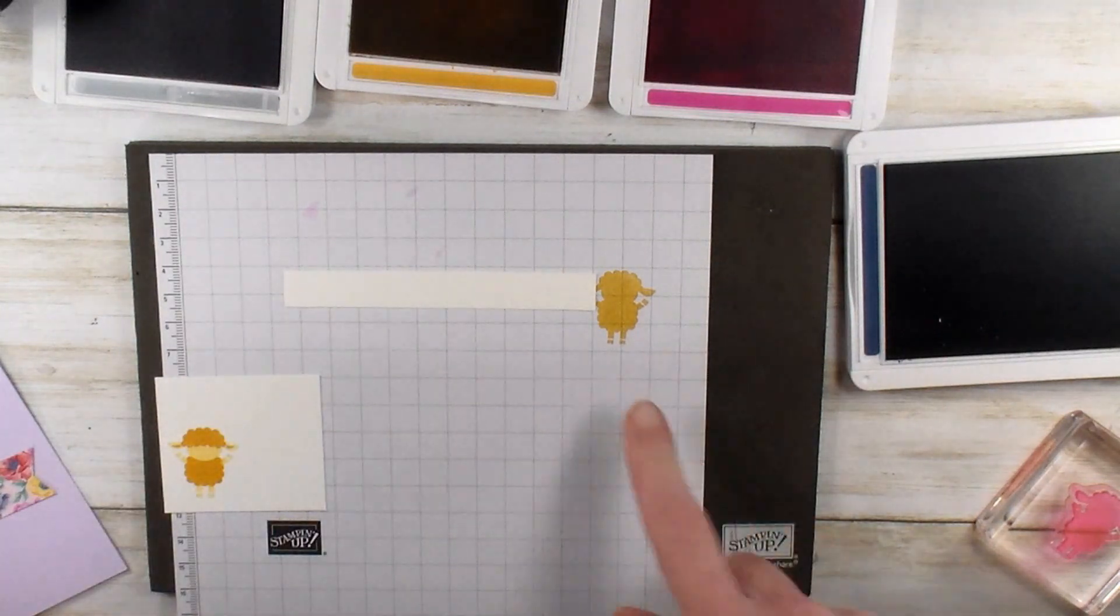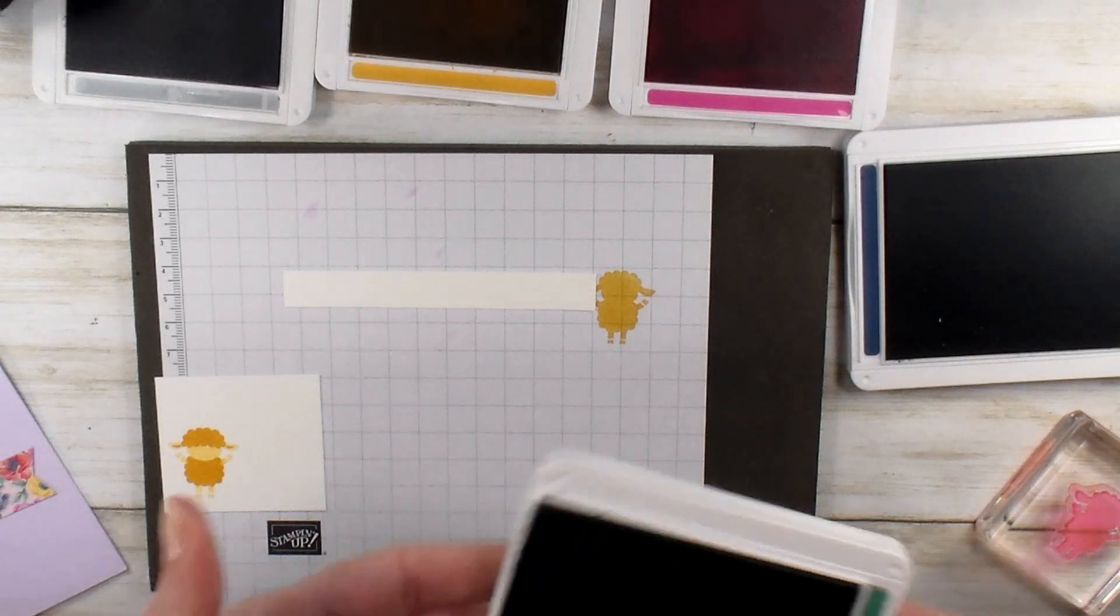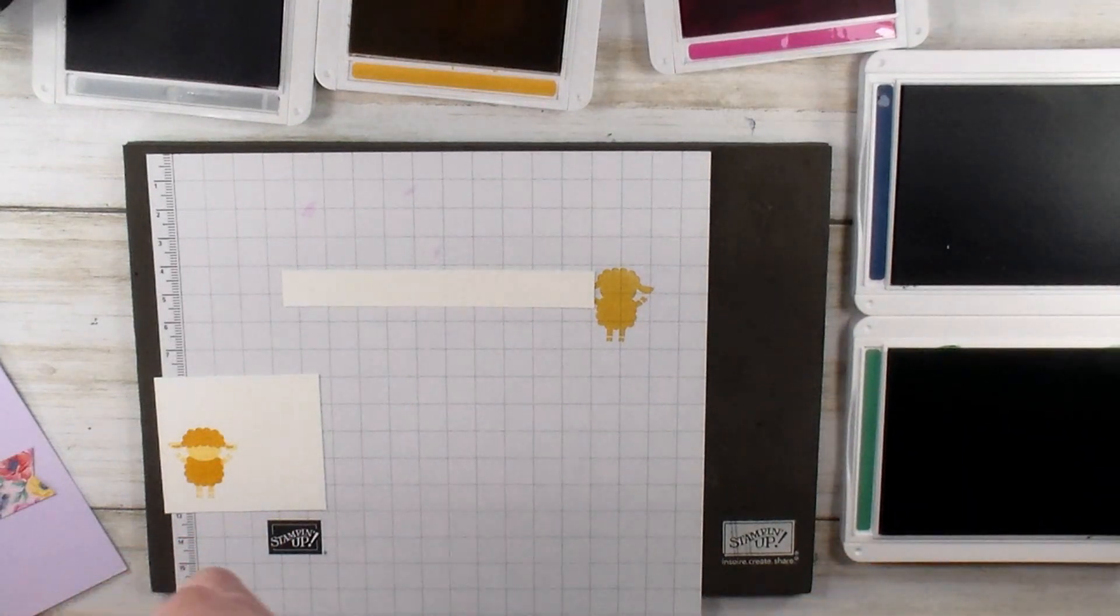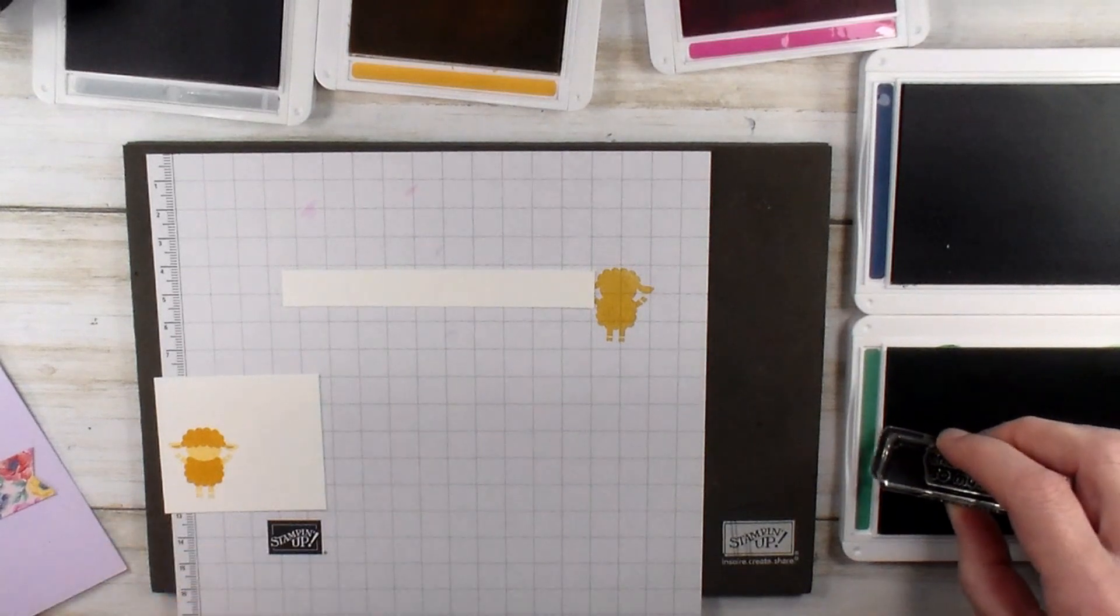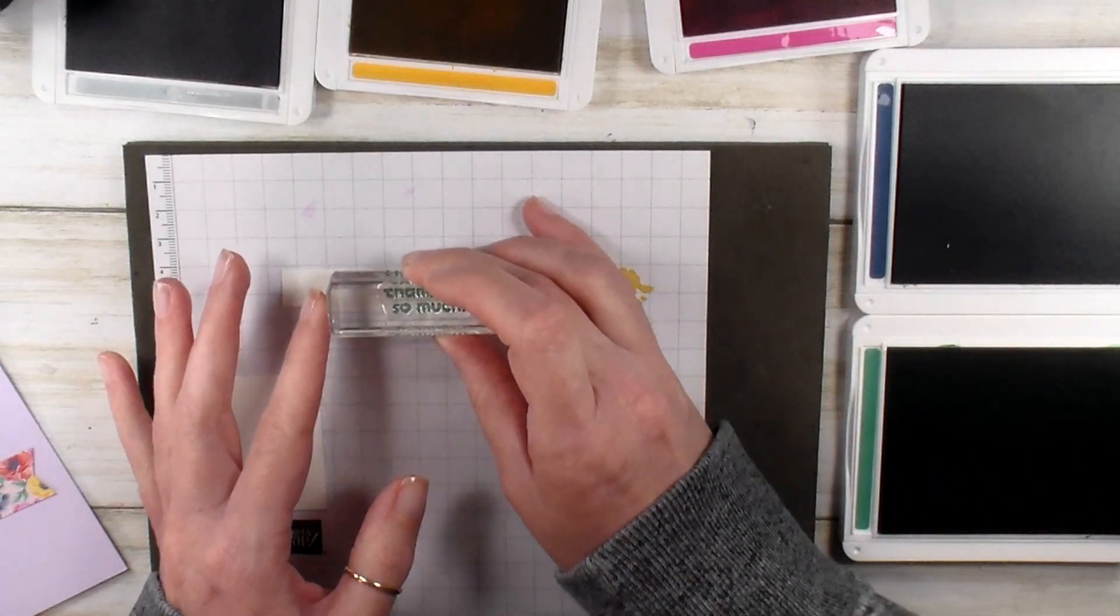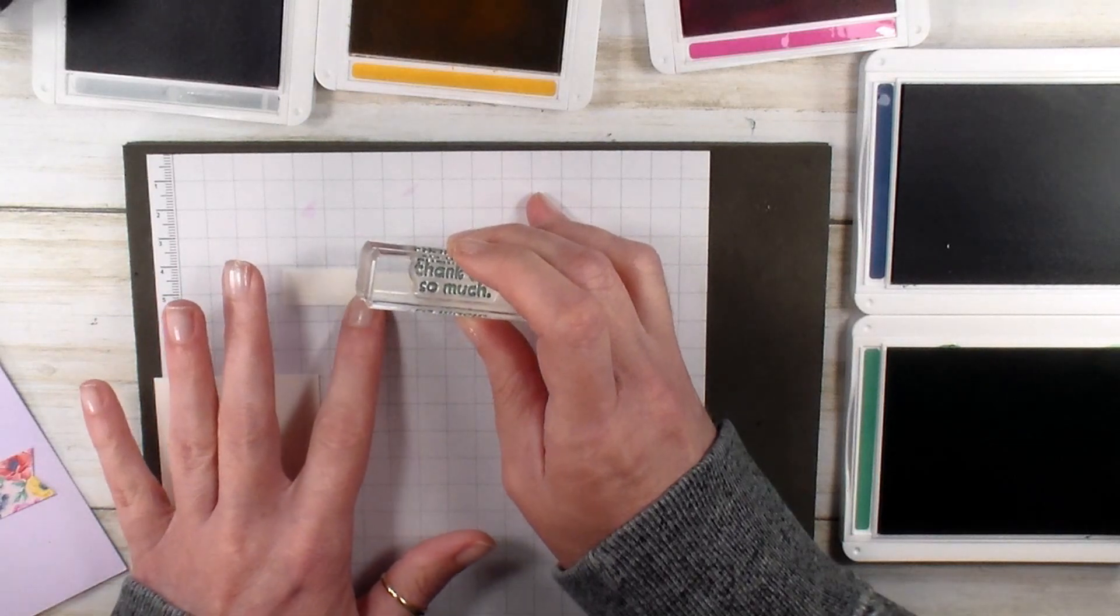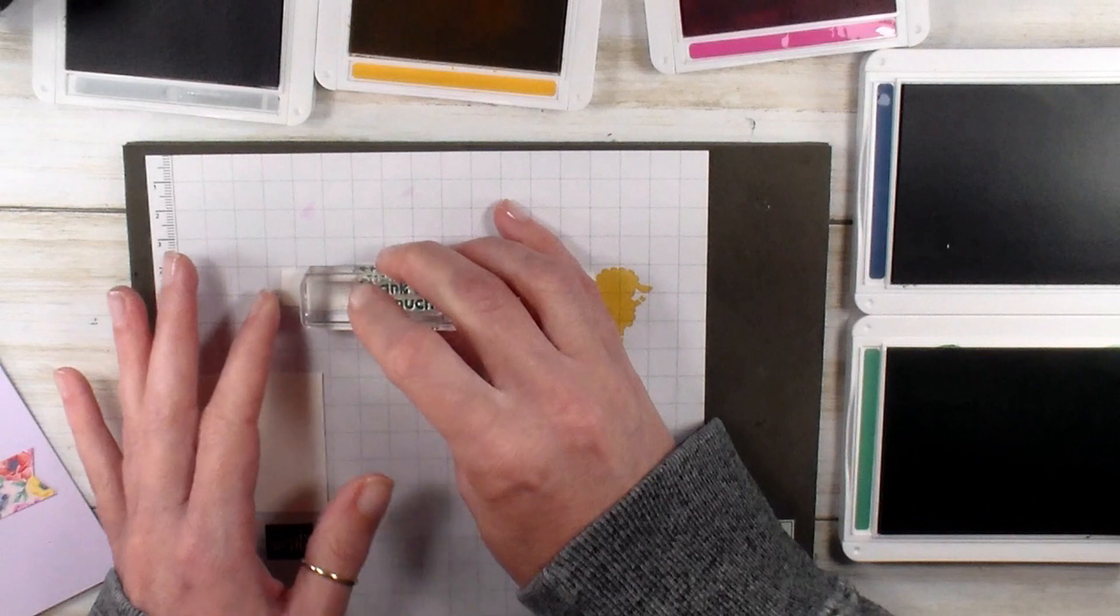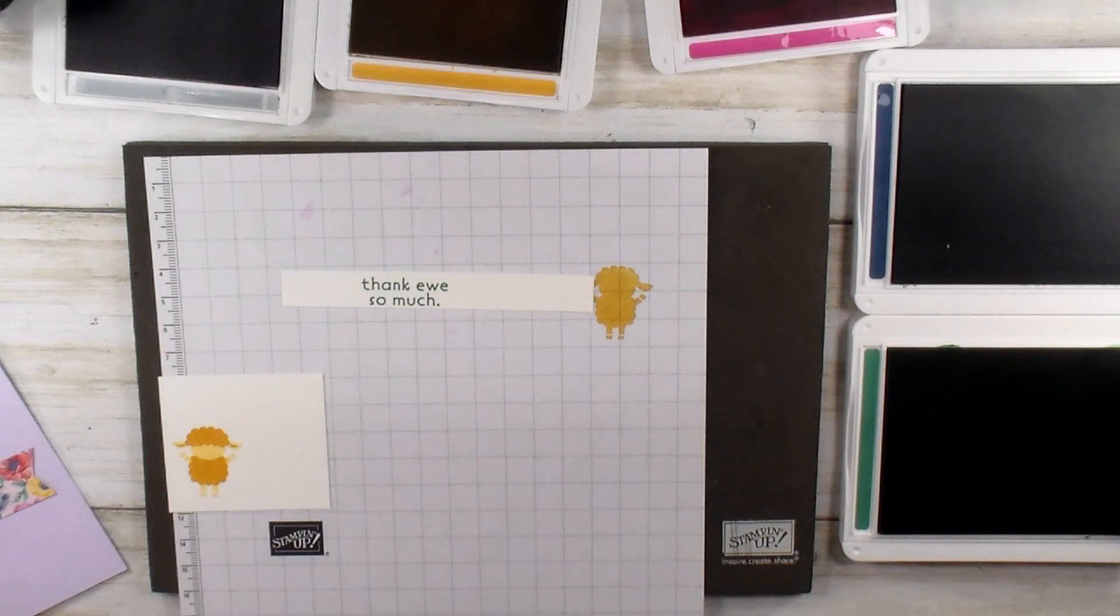All right, give that a second to dry before we put the face on. I've got a half-inch strip here. It's just a scrap. You'll probably want about three and a half inches. Just Jade ink. We've got almost all the in colors now. And thank you so much, the greeting, also from Hippo Happiness. We're going to stamp that one. We want about, I'd say, an inch from the left-hand side. So cute. I love that whimsical font.